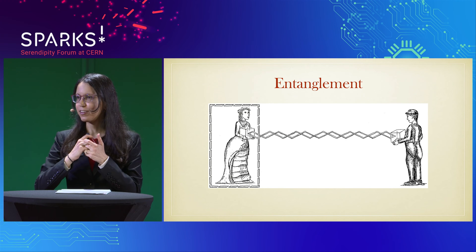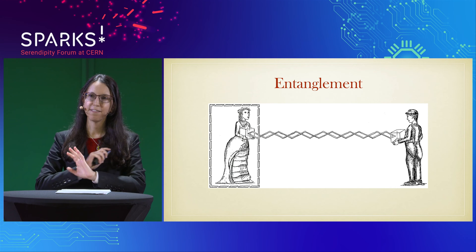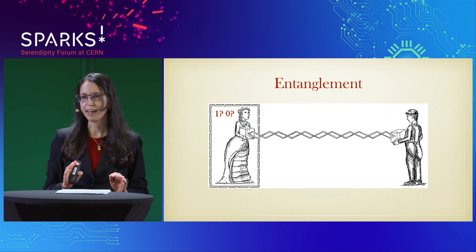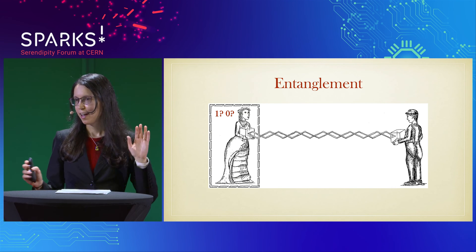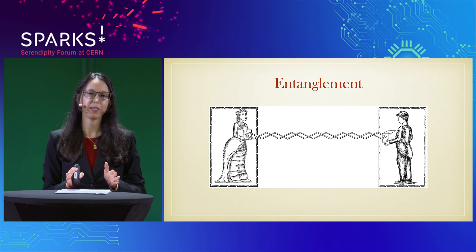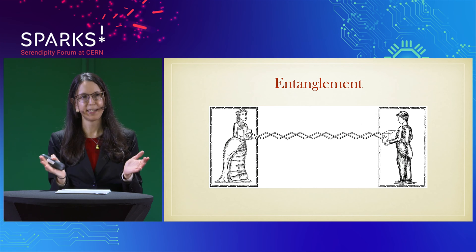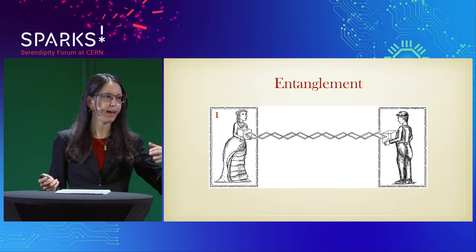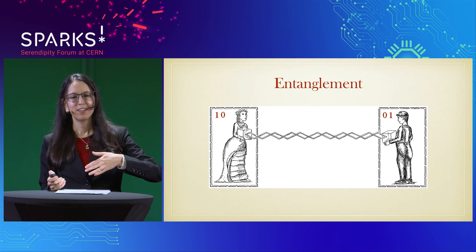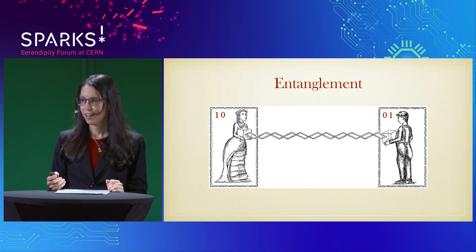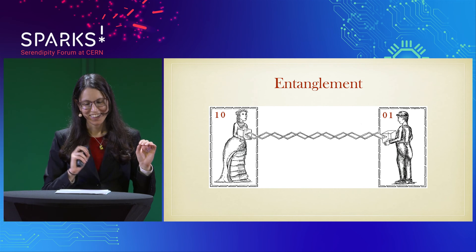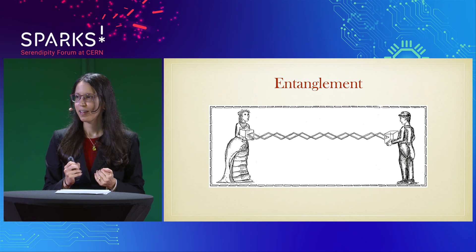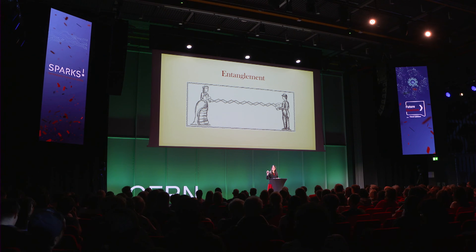If the two particles are entangled as strongly as possible, then Audrey will have no idea about which outcome she'll obtain. Now suppose that Audrey measures her particle and Baxter measures his. Now the two siblings can predict something about the joint outcome. In one example, if Audrey obtains a one, she'll know that Baxter will obtain a zero. And if Audrey obtains a zero, she'll know that Baxter will obtain a one. Furthermore — here's the kicker — there is a measurement that the siblings can perform jointly on the pair of particles together, such that they can predict the outcome with certainty in advance.